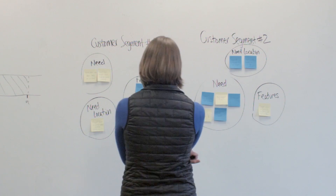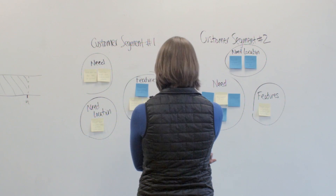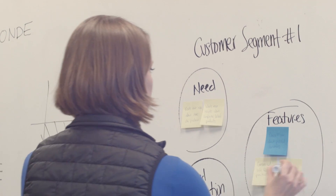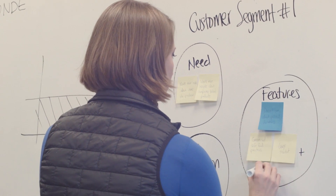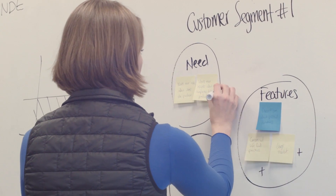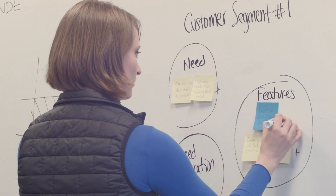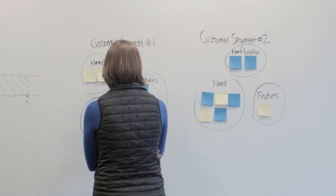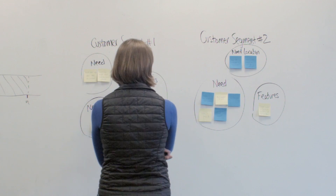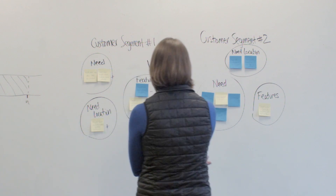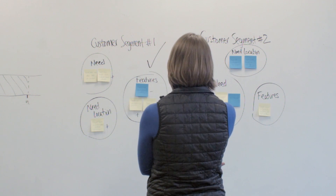Next, see which group of customers has more positive insights. You may be able to see if the needs of customer segments have overlaps, but you should still be choosing one customer group for your target customer. Remember the Lamborghini example and the value of focus. Overlaps will just give you the potential opportunity to grow down the road.